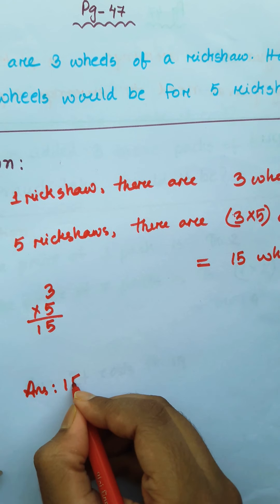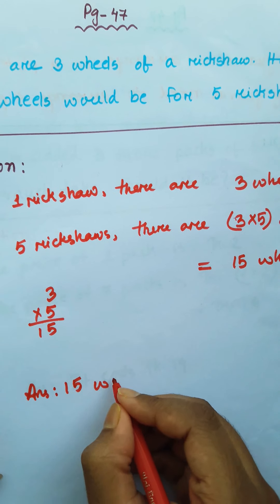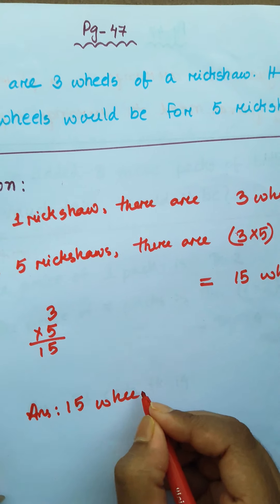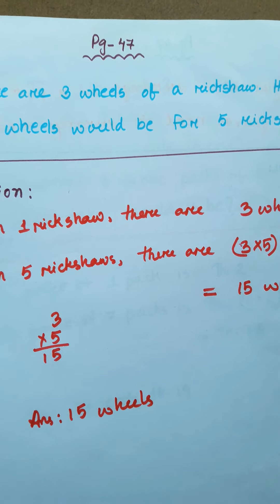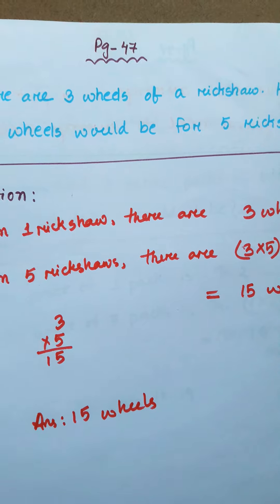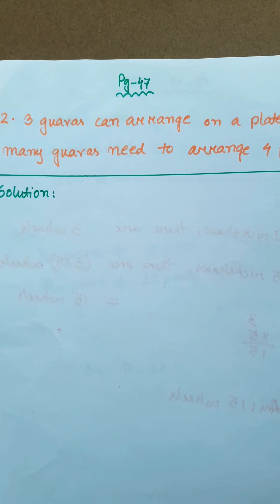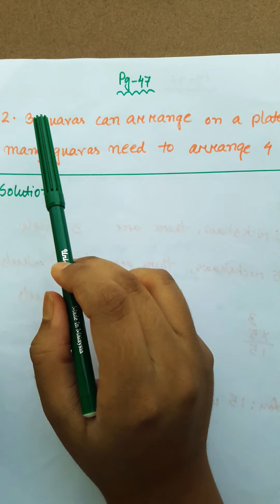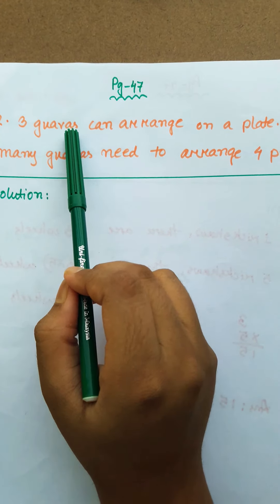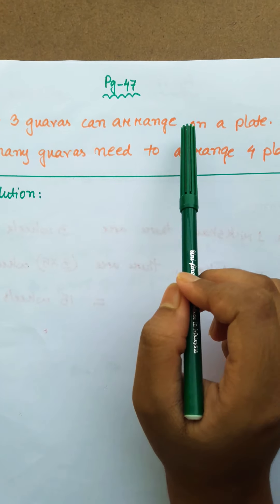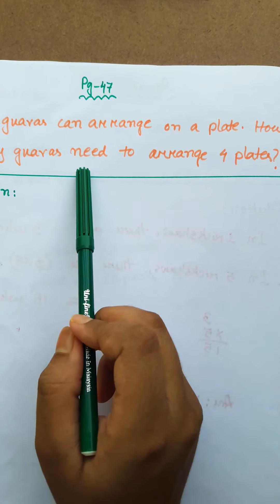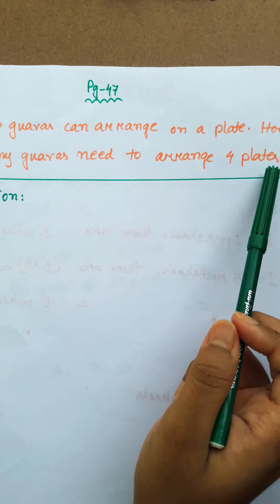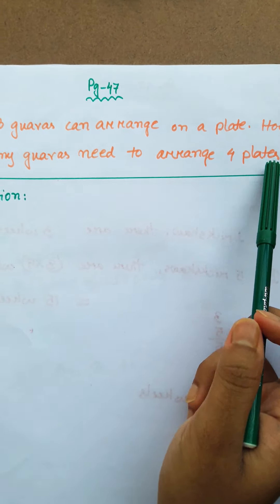Answer: 15 wheels. Now the next math, question 2: 3 guavas can be arranged on a plate. How many guavas are needed to arrange on 4 plates?